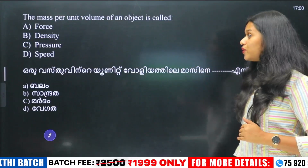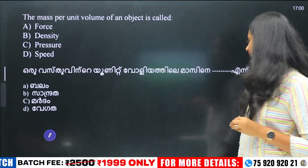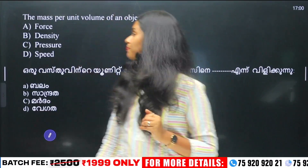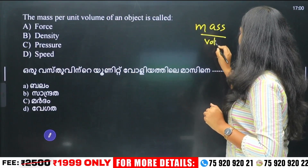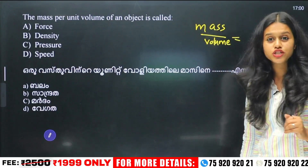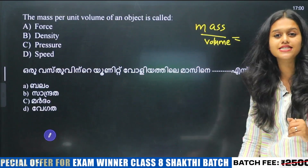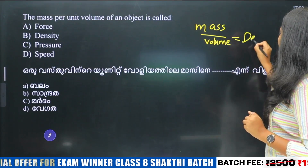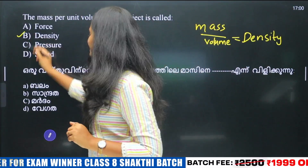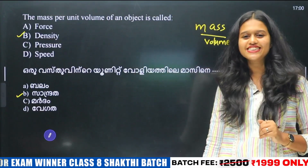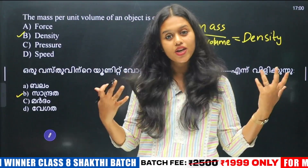Next question: The mass per unit volume of an object is called what? Mass divided by unit volume — what is that called? The answer is density. Option B, density, is the correct answer. If you have questions, you can ask them and then answer.